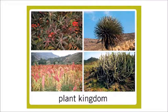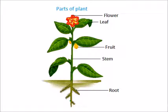The plant kingdom. Parts of a plant. A plant has got different parts: flower, leaf, stem and roots.